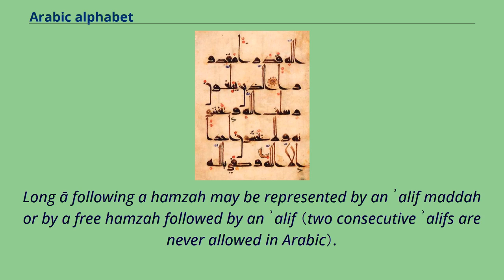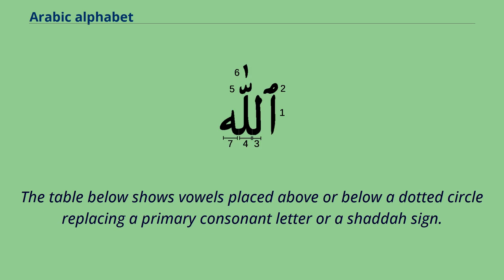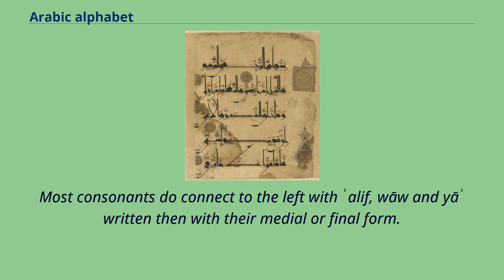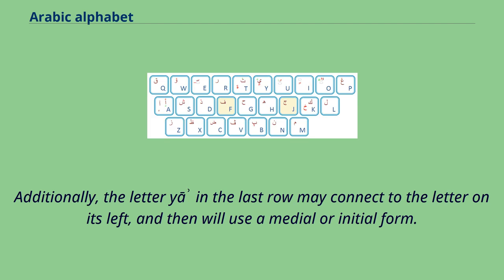Long 'a' following a hamza may be represented by an alif matta or by a free hamza followed by an alif. Most consonants do connect to the left with alif, waw, and ya written then with their medial or final form. Additionally, the letter ya in the last row may connect to the letter on its left, and then will use a medial or initial form.